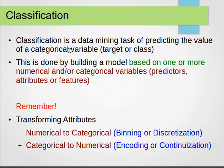This is done by building a model based on one or more numerical or categorical variables. Our variables can be numerical or categorical, and we can use one or more of them to build that model. These variables or descriptors are sometimes known as predictors, descriptors, attributes, or features—they all mean the same thing.